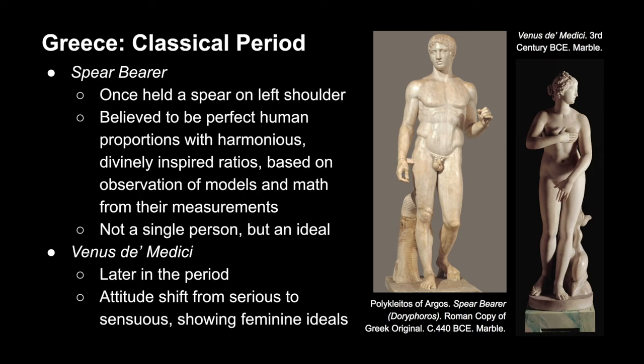The figure on the left is called the Spear Bearer, and as the title suggests, he was once bearing a spear in his outstretched hand, leaning on his left shoulder. The Greeks believed that humans were a perfect form of nature, and the artist who created the Spear Bearer believed he had found perfect human proportions with harmonious, divinely inspired ratios. He measured many models and created formulas from their measurements, thus creating this sculpture from those numbers — representing an ideal body, not necessarily a portrait of a single person.